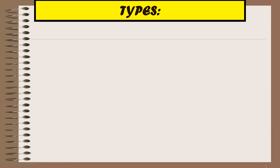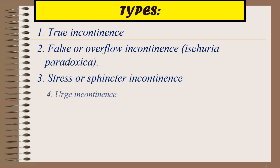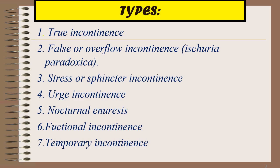There are various types of urinary incontinence. The first one is true incontinence, second is false incontinence, third is stress incontinence, fourth is urge incontinence, fifth is nocturnal enuresis, sixth is functional incontinence, seventh is temporary incontinence, and the eighth is mixed incontinence.